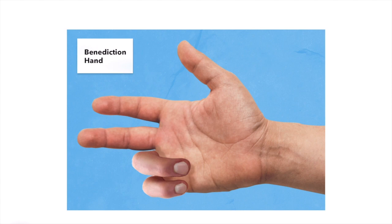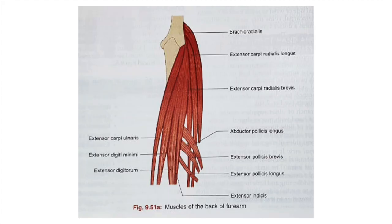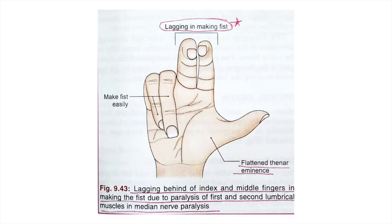Extension of the thumb also occurs because flexor pollicis longus and the thenar group of muscles are paralyzed. Extensor pollicis longus and extensor pollicis brevis, innervated by the posterior interosseous nerve — a deep branch of the radial nerve — will dominate due to unopposed action, causing extension at the IP joint of the thumb.